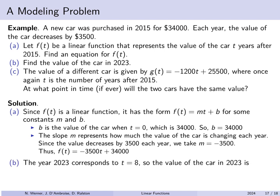To find the value of the car in 2023, we note that 2023 minus 2015 is 8 years, so t = 8. Plugging into our function: f(8) = −3,500 times 8 plus 34,000. That works out to $6,000. So eight years after purchasing the car for $34,000, it is worth only $6,000.